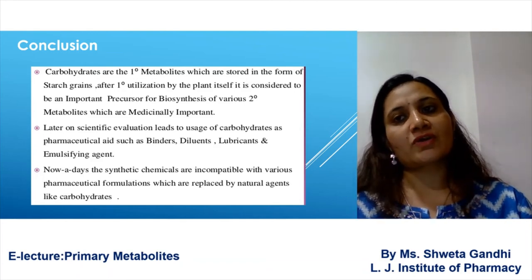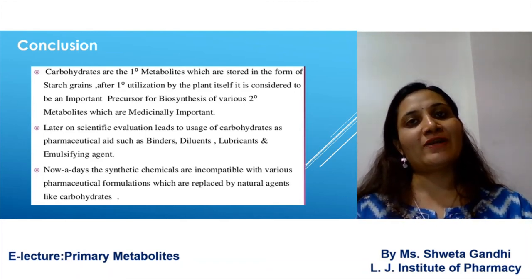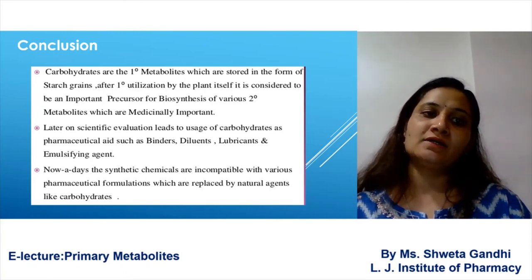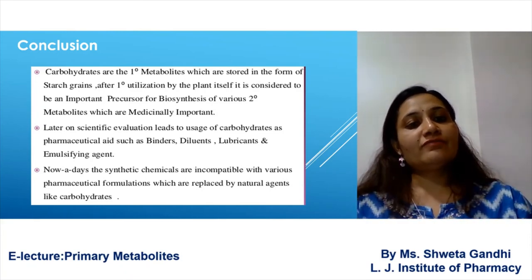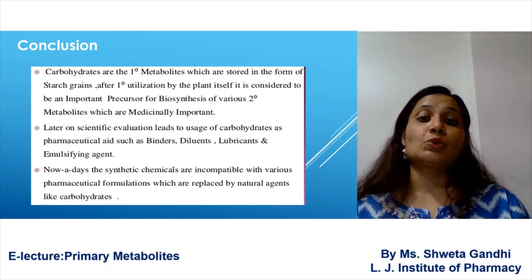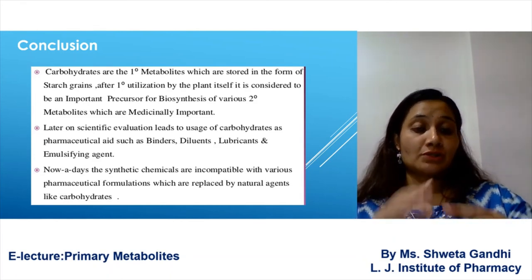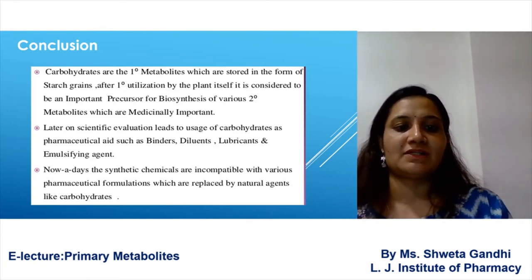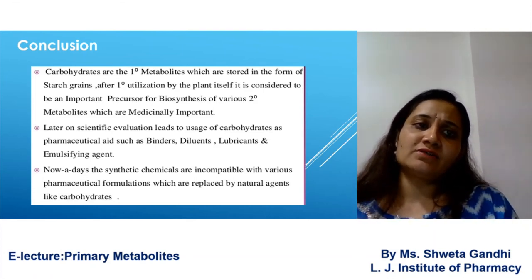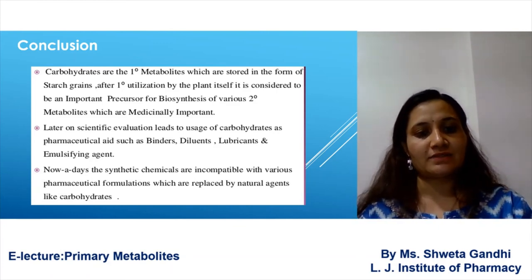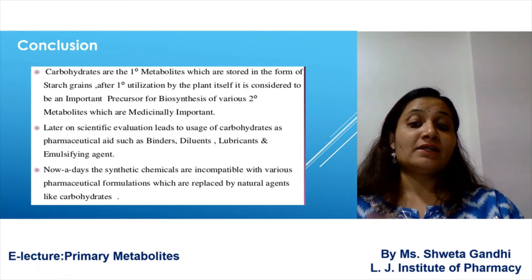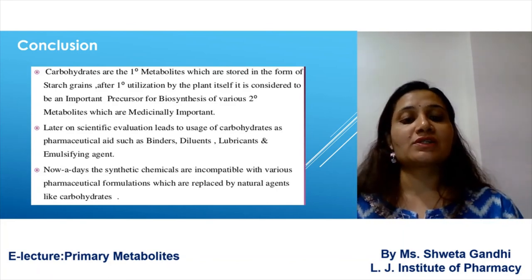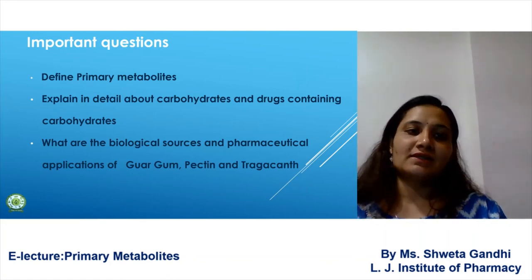To conclude, in the study of primary metabolites we covered the differences between primary and secondary metabolites and carbohydrate-containing drugs such as agar, acacia, pectin, and guar gum. Carbohydrates are primary metabolites stored in the form of starch grains and can serve as precursors for secondary metabolites. The main uses of carbohydrate-containing drugs are as binders, diluents, lubricating agents, and stabilizers. Nowadays, synthetic chemicals are being replaced by natural agents in pharmaceutical formulations.